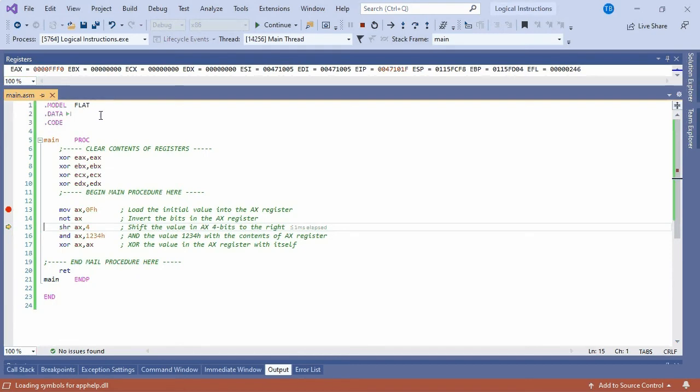Press F11 again to execute the SHIFT RIGHT instruction to shift the bits in the AX register four times to the right. This is the opposite of the SHIFT LEFT instruction we've seen before, dividing the value in AX by 2 for each bit shifted right. Now AX contains 0FFF in hex.